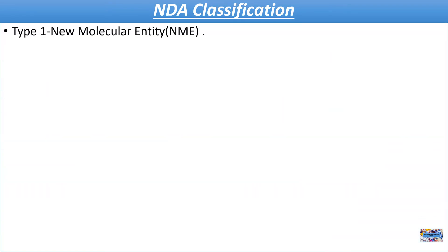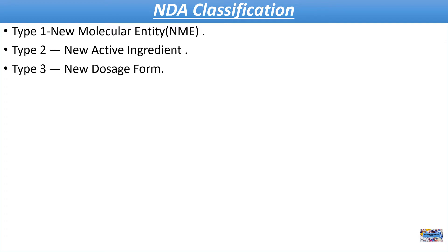New Drug Application Types. Type 1: New Molecular Entity — an active ingredient that contains a new active moiety which has not been previously approved or marketed. Active moiety means the part responsible for the pharmacological action of the drug. Type 2: New Active Ingredient — whose active moiety has been previously approved or marketed. Type 3: New Dosage Form — a new dosage form of a drug that has been previously approved or marketed.